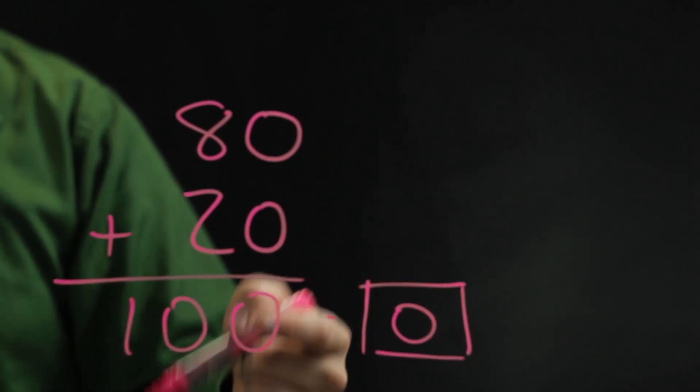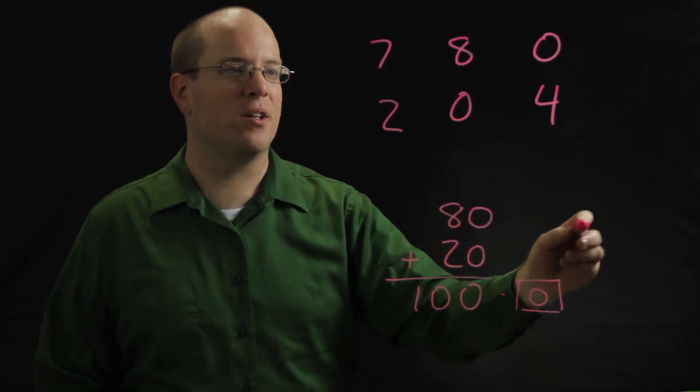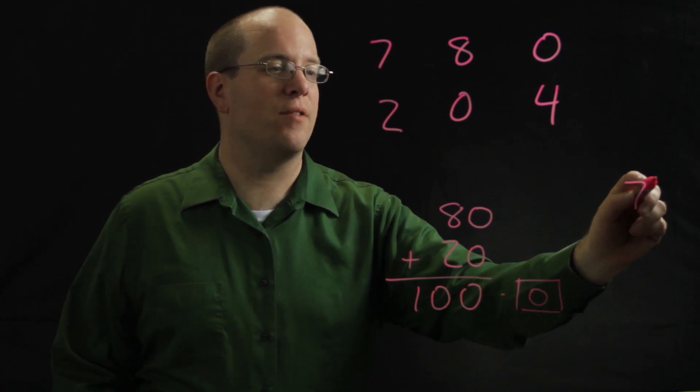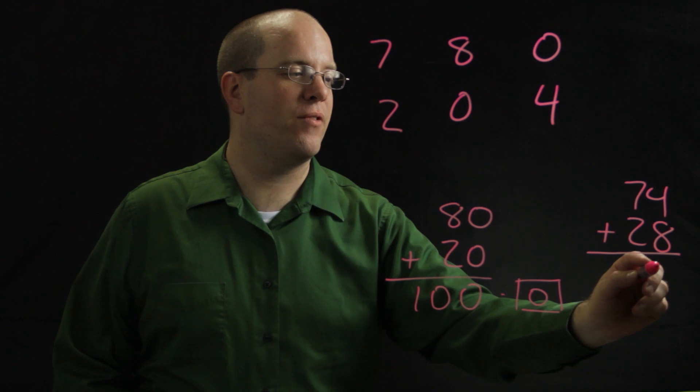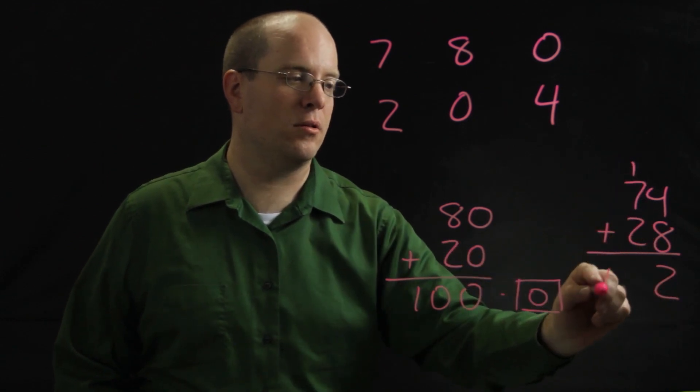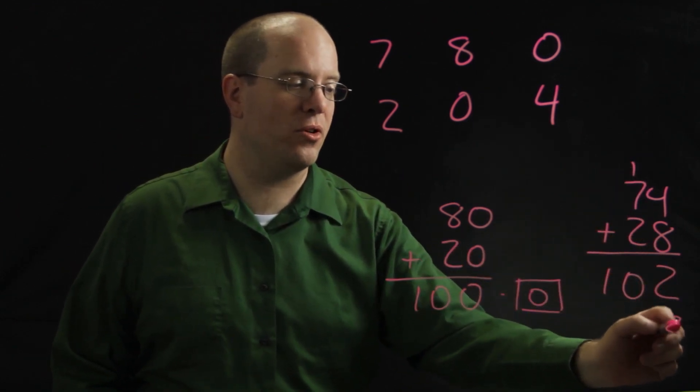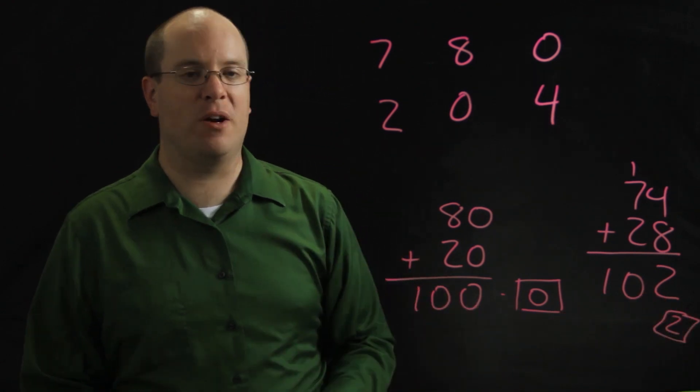You want a lower score. Someone else might have gotten these same cards and tried 74 plus 28, and they would have ended up with 102, so their score would have been two, so I would have had the better score.